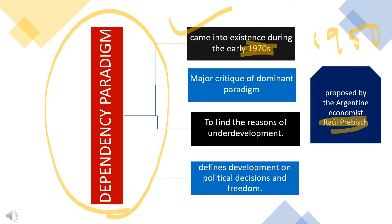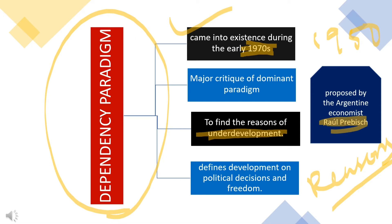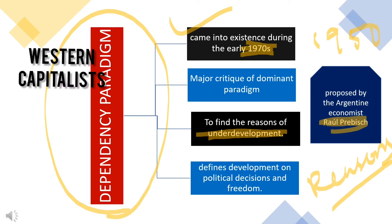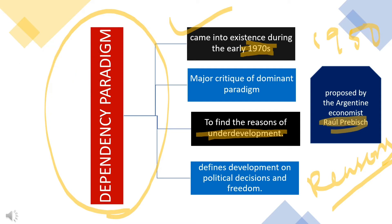It emerged as a reaction to the dominant modernization paradigm, which caused inequalities and under-development in third world nations. The dependency paradigm emerged with the main concern of finding the reasons for under-development. Dependency scholars argued that the under-development in third world colonies was basically created by the western developed nations, mainly because of urbanization and modernization.